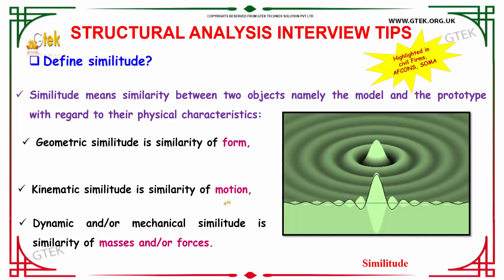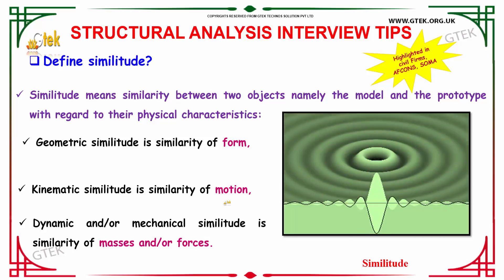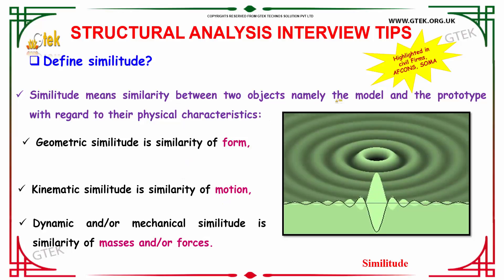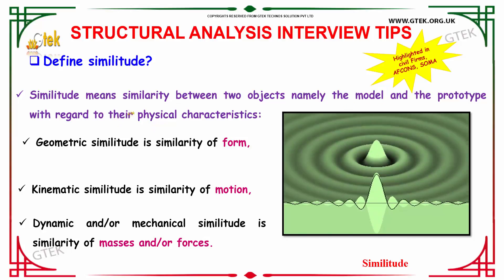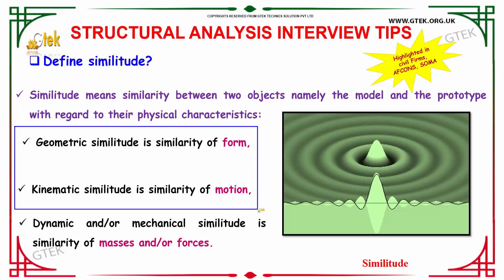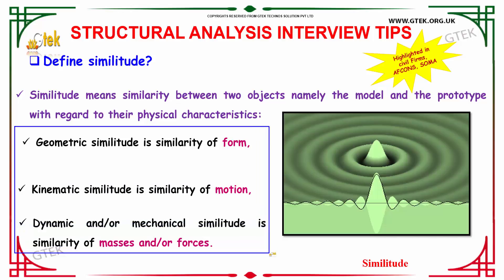The next question is: define similitude. Similitude means similarity between two objects — namely the model and the prototype — with regard to their physical characteristics. Geometric similitude is similarity of form. Kinematic similitude is similarity of motion. If the similarity is dynamic or mechanical, it is known as dynamic or mechanical similitude, which requires masses and forces to be similar.